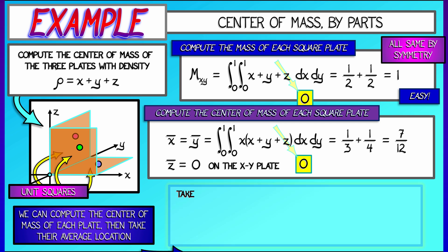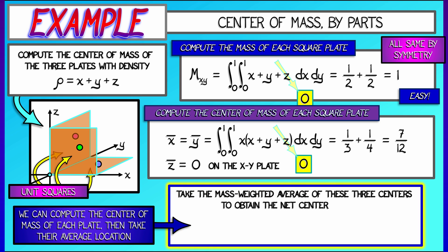Now to get the center mass of the entire object, the conglomerate, what I need to do is take the average of the centers of masses of the individual plates. In this case, x-bar, y-bar, and z-bar are going to be equal, and they're going to be one third, the average, of seven twelfths plus seven twelfths plus zero,